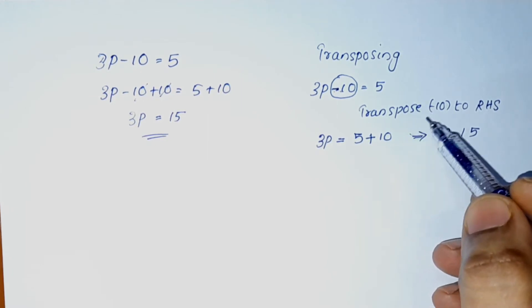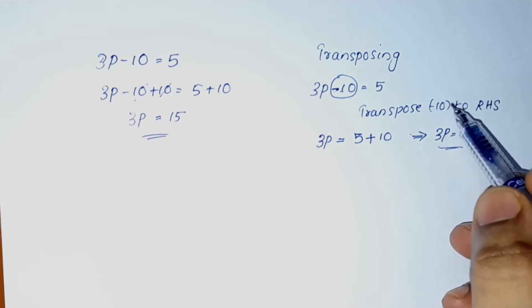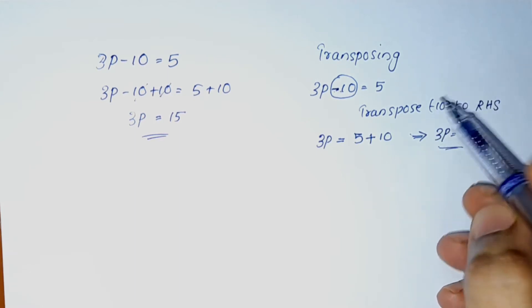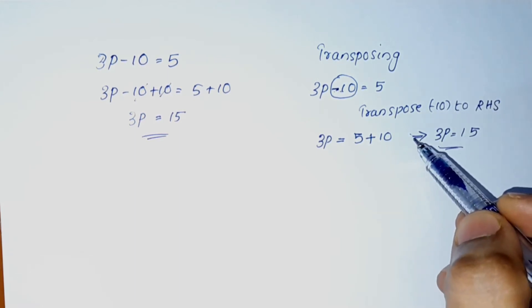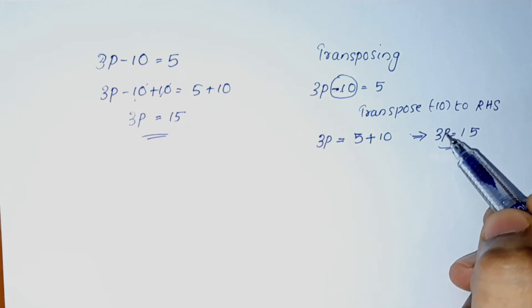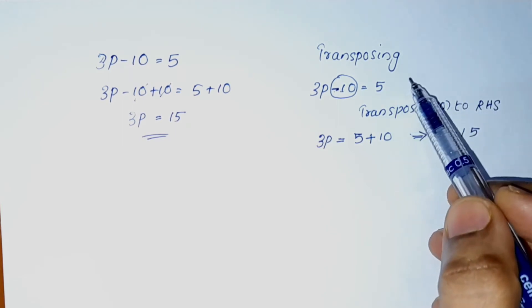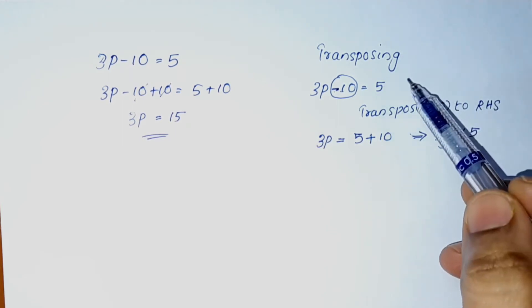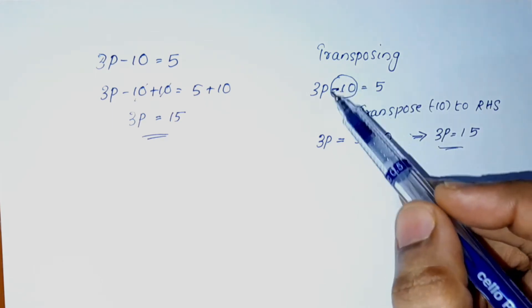Transposing is called changing side. Changing side is called transposing. While transposing a number, we change its sign. Transpose is called sign change. Now we will transpose the minus sign.